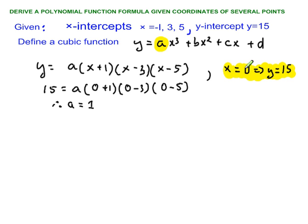So, when x is equal to 0, y is equal to 15. The general equation of that polynomial function that we're looking for can be written in factored form. This is an expanded form, but we want to do it in factored form, which is way more convenient for us.